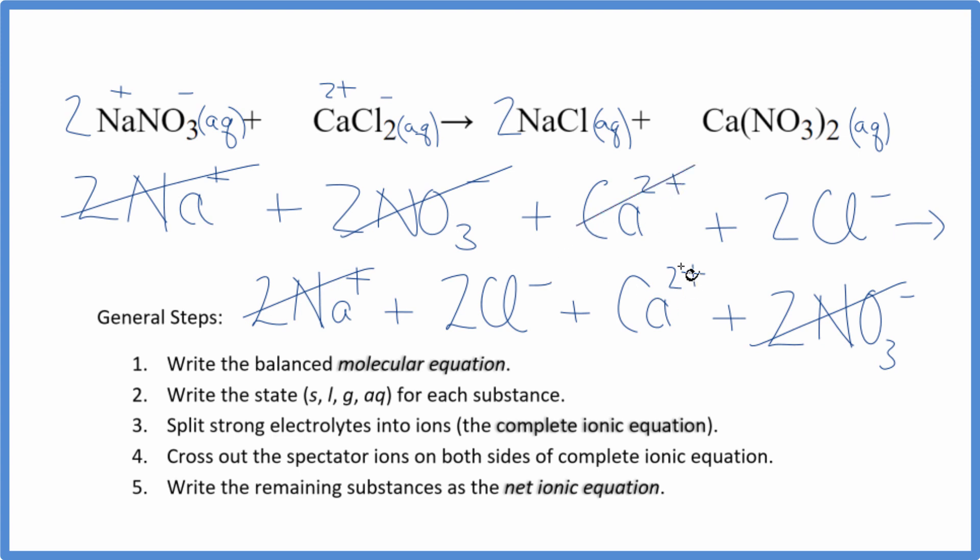I have a calcium ion here and here. Two chlorides, two chlorides. You can see I've crossed everything out. So what remains is the net ionic equation, but nothing remains. So there's no reaction and no net ionic equation for NaNO3 plus CaCl2.